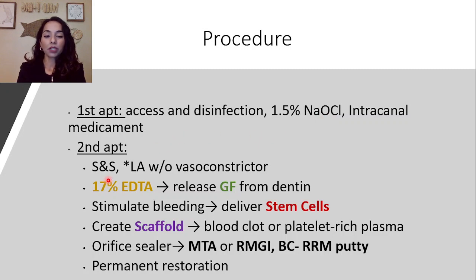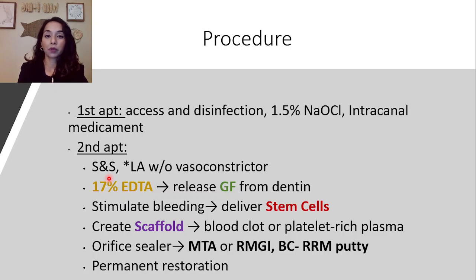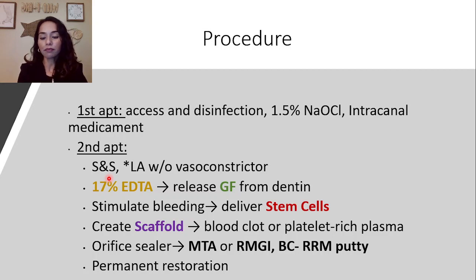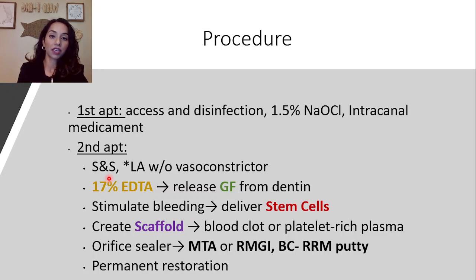In the second appointment, re-evaluate the signs and symptoms. If they have resolved, you can move forward. If they are still present, you may need to repeat the first appointment's disinfection. It is very important in the second appointment to use a local anesthetic without a vasoconstrictor — for example, 3% mepivacaine — because we want to stimulate bleeding and a vasoconstrictor might affect that.